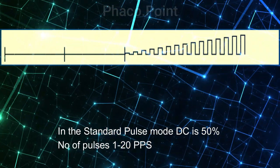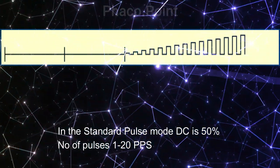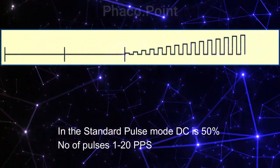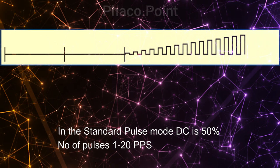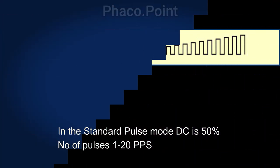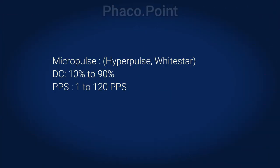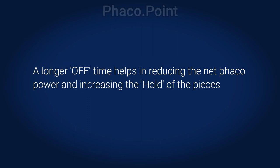A standard pulse mode will always have a duty cycle of 50%, and the number of pulses can vary from 1 to 20. In a micropulse mode, the duty cycle can actually vary from 10% to 90%, and the number of pulses can vary from 1 to 120 pulses per second.